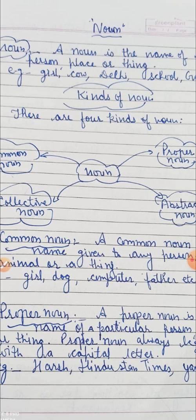For example: a girl, cow, Delhi, book, school, pencil, pen, table, chair, Ganga, etc. These are nouns.